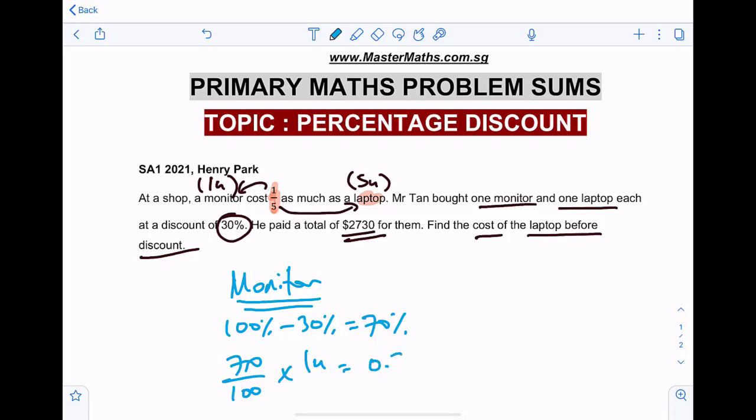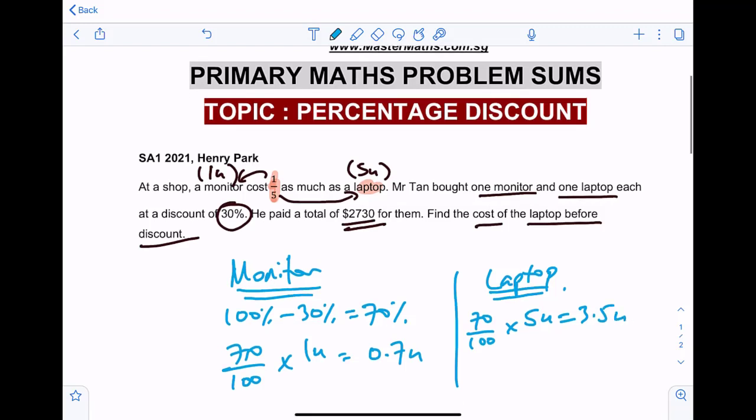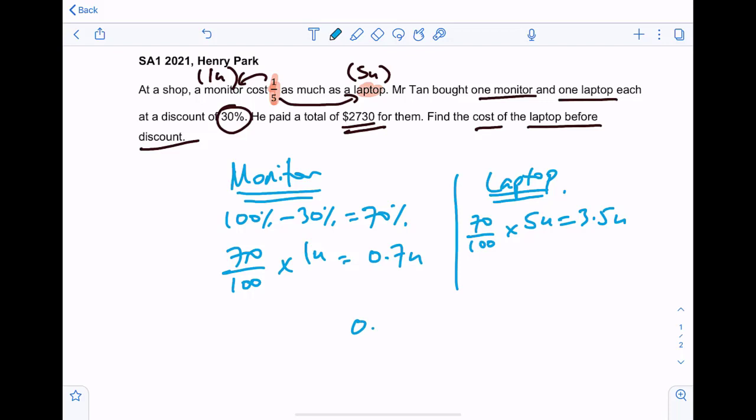Right, likewise for the laptop, we do a similar step. What is 70% of the original five units? 3.5 units. All right, total units: 0.7 units plus 3.5 units.